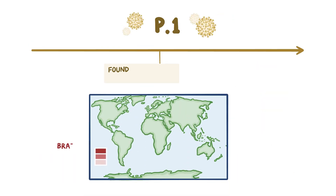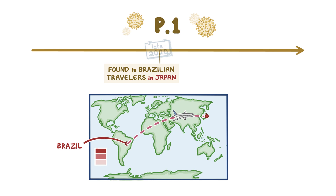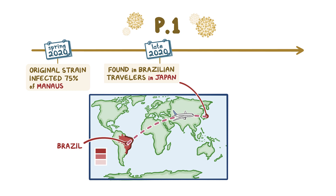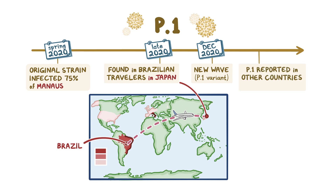P1 was first found in Brazilian travelers in Japan in late 2020 and continues to be a major strain within Brazil. In the spring of 2020, the original COVID-19 strain infected 75 percent of the Brazilian city Manaus. It was thought by some epidemiologists that the city reached herd immunity given the high percentage of infections. However, by December 2020, another wave of COVID-19 infections began, caused by the P1 variant strain. The variant strain has been reported in several other countries as well and was found in the US in late January 2021.